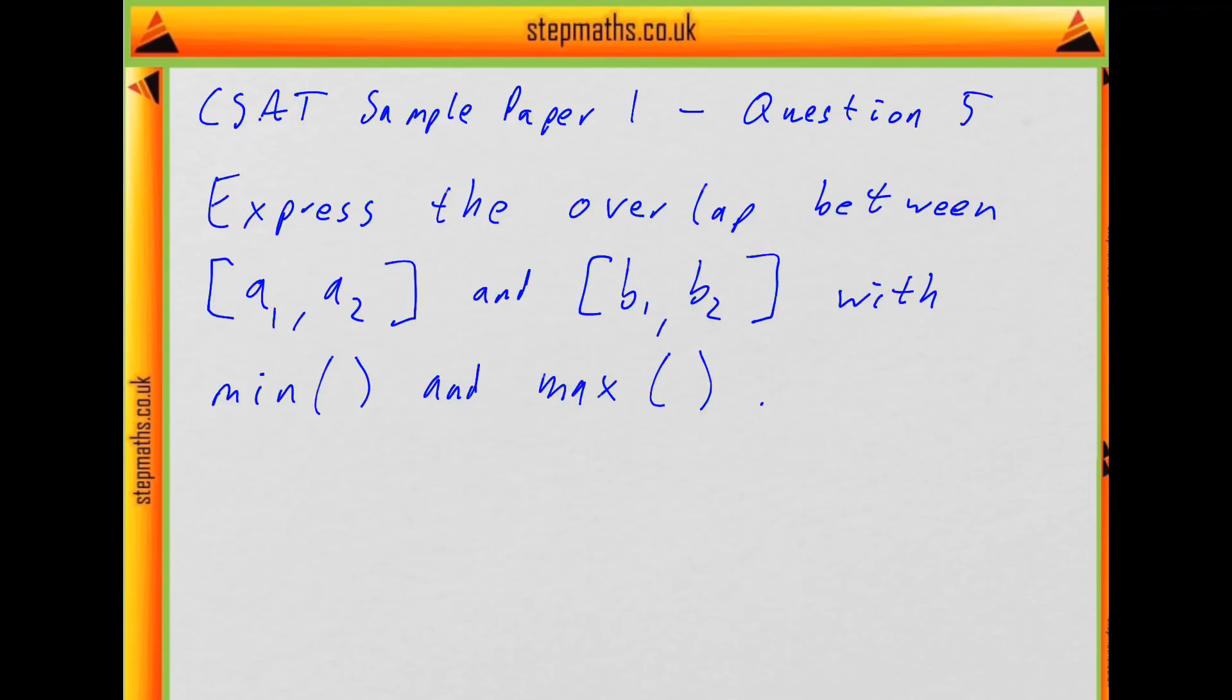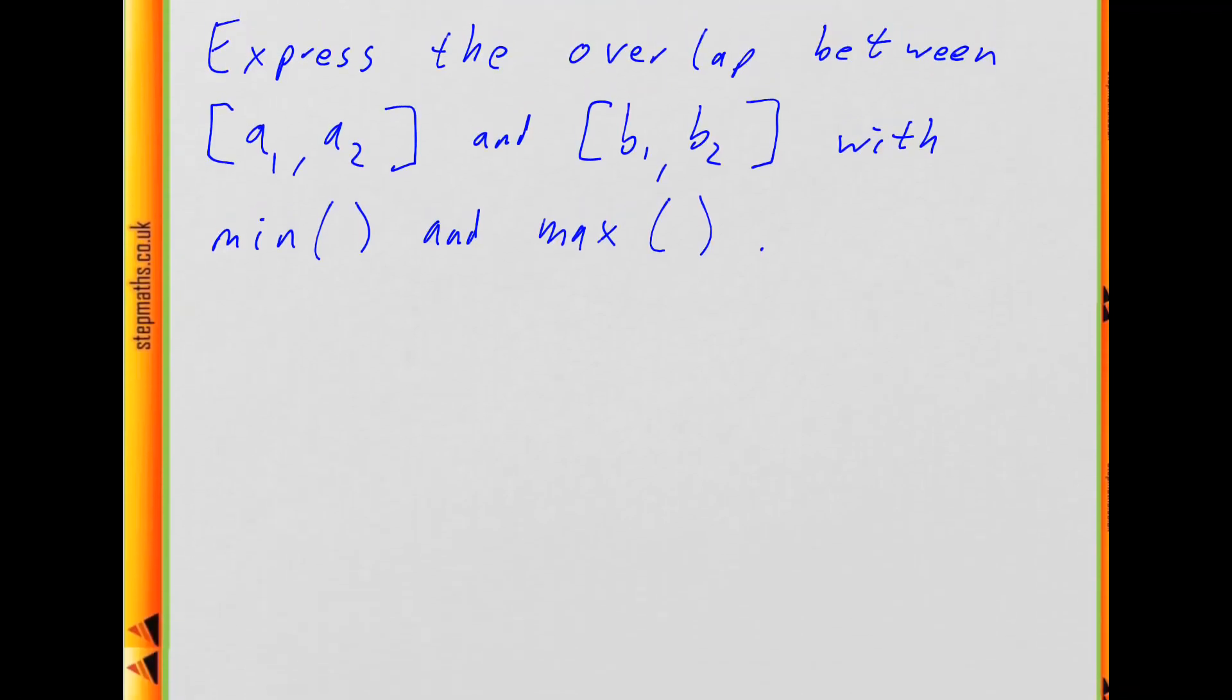I think here it's easiest to try and deal with a simple case first and then think about everything that could go wrong. When we imagine them looking something like this, we've got a1 to a2 here, and then b1 to b2 here. What's the overlap going to be?